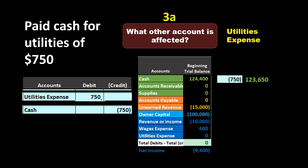Once you identify the account, you want to think through: does it make sense to debit utilities expense? This helps you double-check the transaction and better understand how expenses work. Utilities expense is an expense account, and all expense accounts have debit balances. We need to make it go up, so we do the same thing to it — another debit. So it does make sense that we debit it. If we posted it, the utilities expense would increase from zero by $750 to $750.